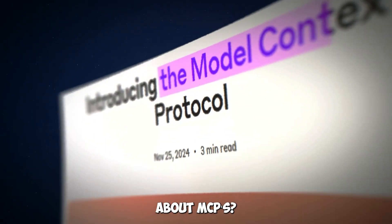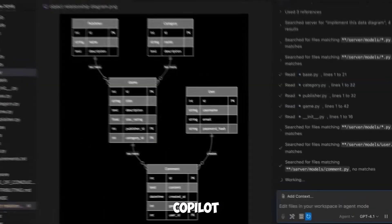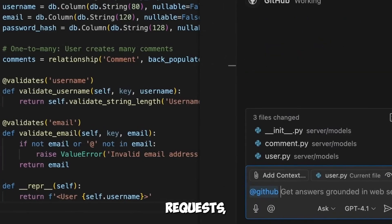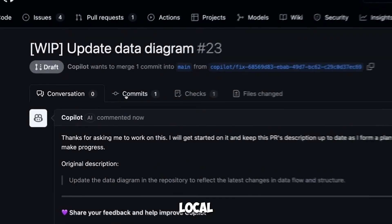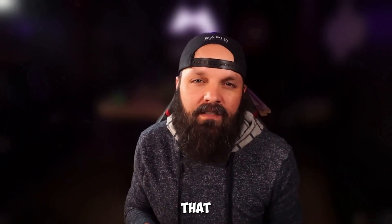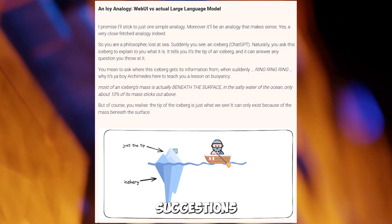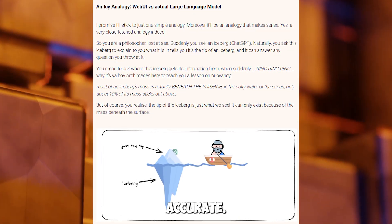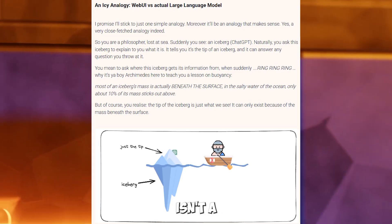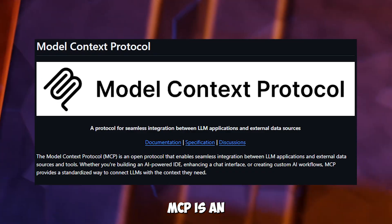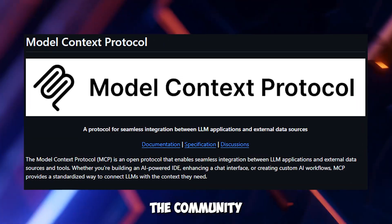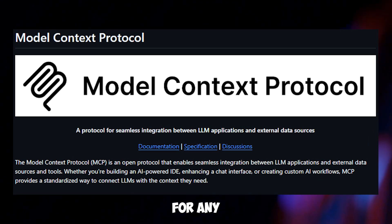Why should you even care about MCPs? Imagine Copilot not just suggesting code, but creating pull requests, updating Jira tickets, running local scripts, or even searching your company's private knowledge base. MCPs can help automate those tedious tasks that involve multiple tools. By giving the LLM access to real-time data from your tools, suggestions and actions become far more relevant and accurate. And the best part — this isn't a proprietary lock-in. MCP is an open protocol, meaning the community can build and share connectors for any tool.